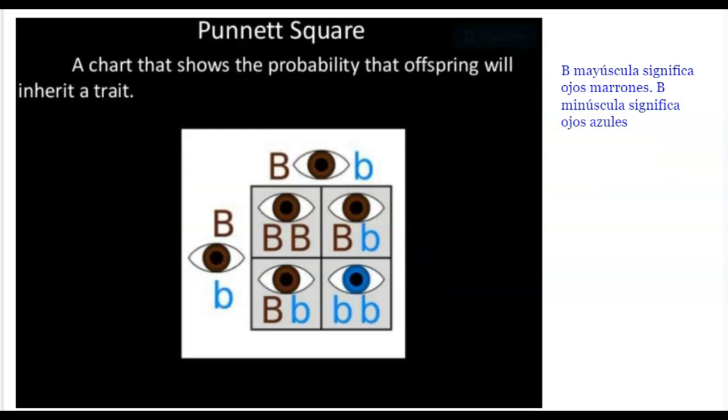Here is another Punnett square, another example. Capital B is brown eyes. It is dominant. Little b is a recessive trait. That means it does not show. In this example, both parents are heterozygous. Big B, little b. Big B, little b. When we make the Punnett square...